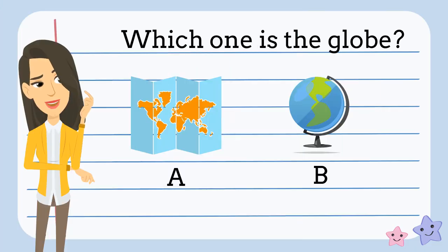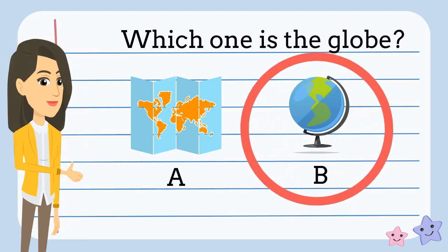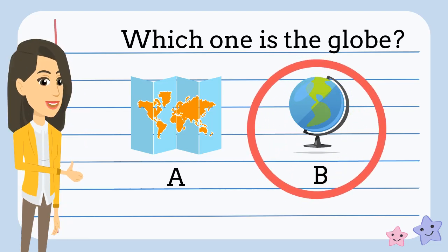Which one here shows a globe? A or B? What do you think? You're right. B shows the globe.